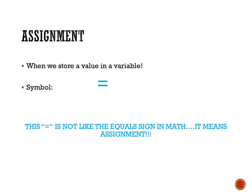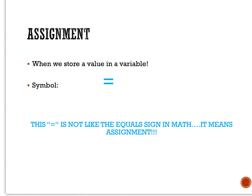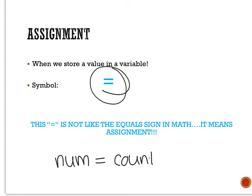A little reminder, especially for those of you that maybe have not programmed in a while: the equal sign that you see in programming does not work like an equal sign in math. We are not stating that both sides of the equal sign are equal. Instead, remember that this equal sign means assignment. So for example, if I had num equals counter times 4.